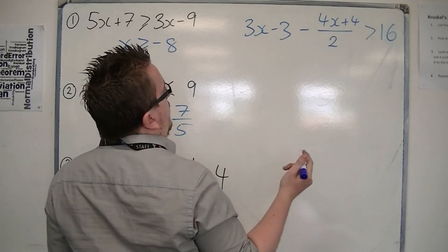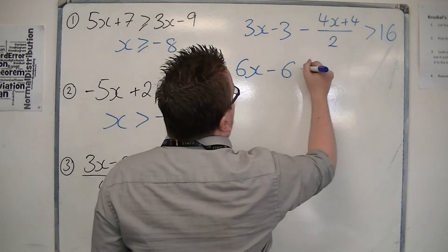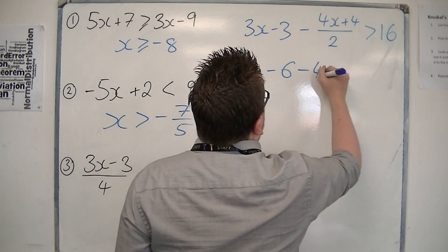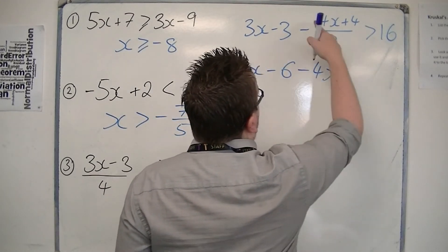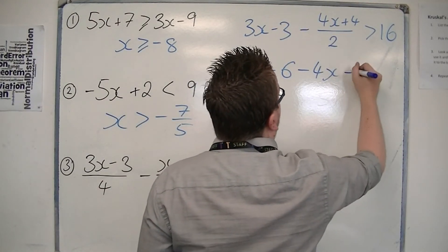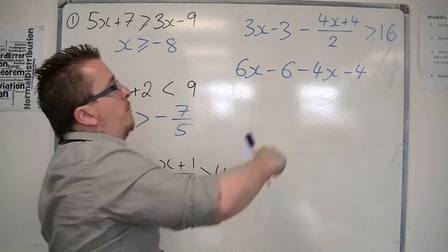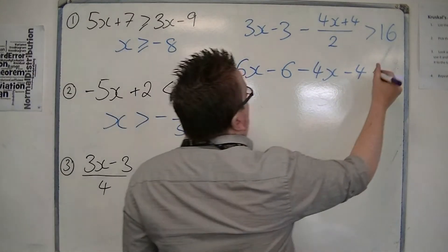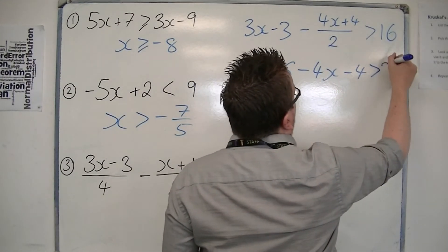Multiplying through by 2, we get 6x minus 6, minus the quantity 4x plus 4. That's minus 4x, minus 4. And the 16 becomes 32.